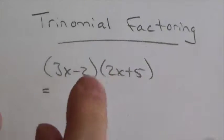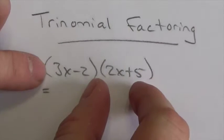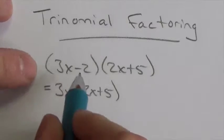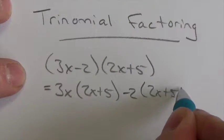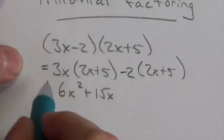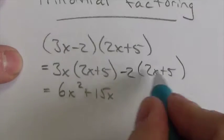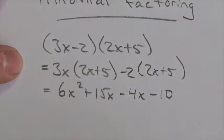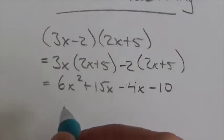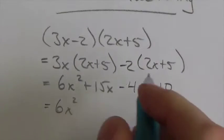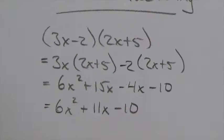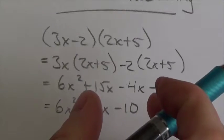I'm going to expand this out. We take both terms from the first binomial and distribute them to both terms in the second binomial — it's just distribution. So 3x gets multiplied by 2x plus 5, and then negative 2 also gets multiplied by 2x plus 5. Distributing the 3x gives us 6x squared plus 15x. Then negative 2 gets distributed, giving us negative 4x minus 10.